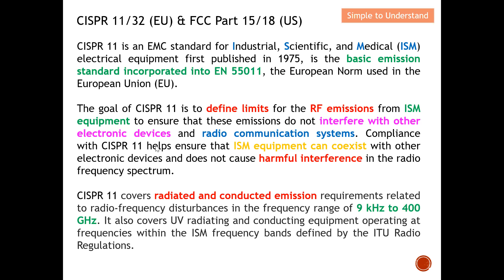Compliance with CISPR 11 helps to ensure that ISM equipment can co-exist with other electronic devices and does not cause harmful interference in the radio frequency spectrum. By setting a limit line, we ensure that the devices manufactured are not able to cause interference to other electronics devices. CISPR 11 also has limit lines to ensure we don't radiate large and harmful electromagnetic waves that could harm human health. This is the goal of CISPR 11.